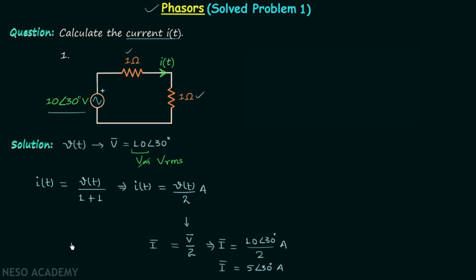We are required to find IT, not I phasor. We know IT will be equal to IM cos omega t plus theta, where IM is the maximum value of IT or the amplitude of IT. Cos we have taken because usually everyone has taken cos as the parent signal. You can also take sine, but we are taking cos because in all the books the derivation is done by taking cos. Theta is the phase, and from here we have two informations.